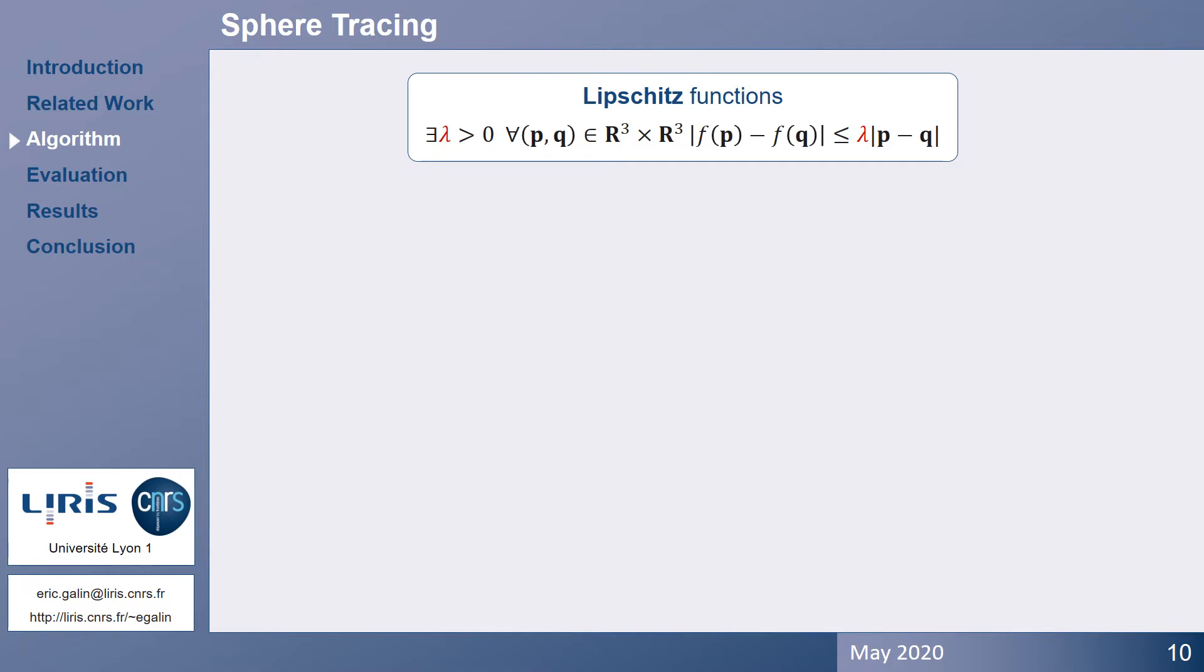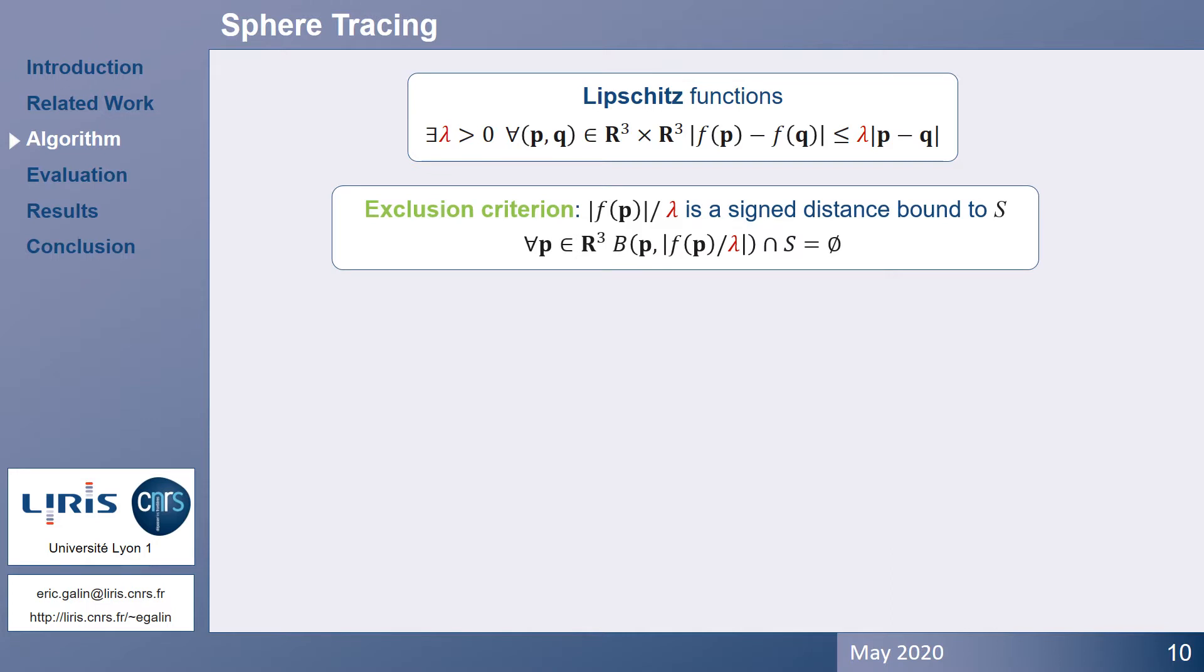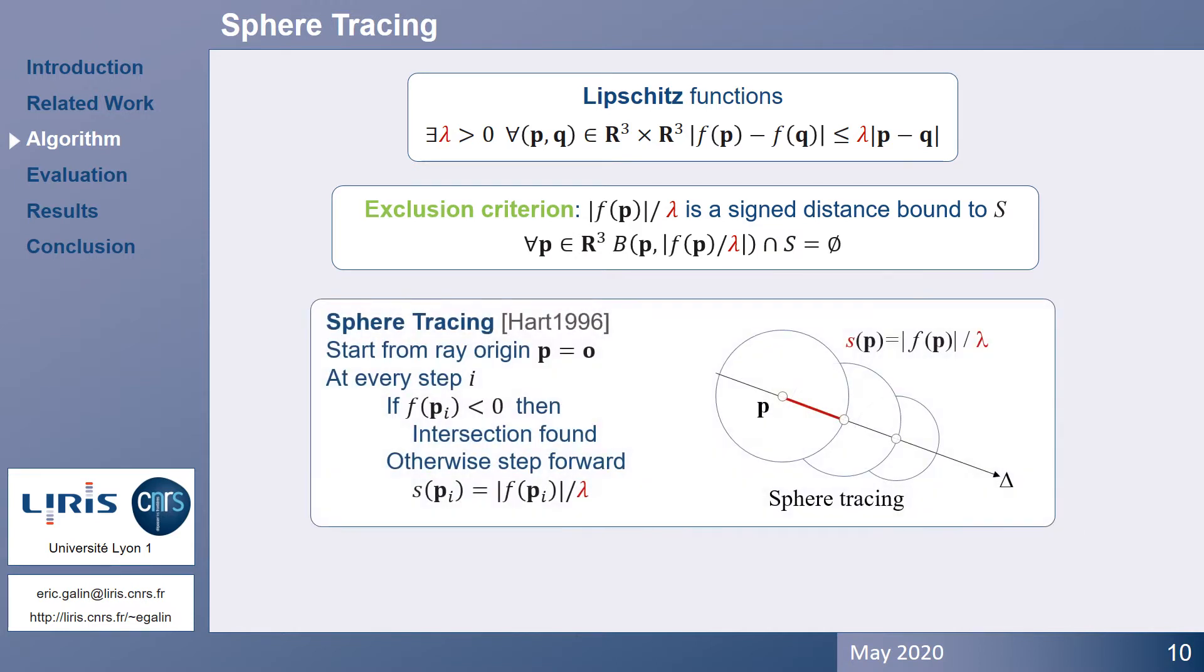The interesting property is the exclusion criterion. The sphere centered at p and with radius f of p over lambda does not intersect the surface. Sphere tracing takes advantage of this property. At every step, it is safe to step forward by an adaptive increment f of p over lambda. Unfortunately, while stepping adapts to the value of f, the Lipschitz constant is global.